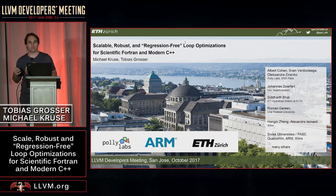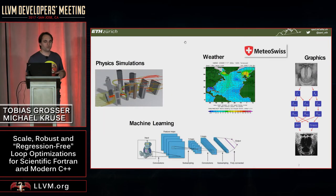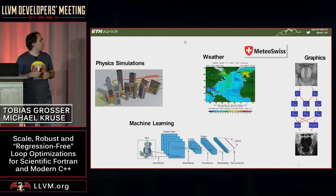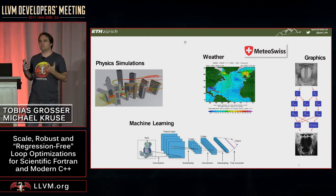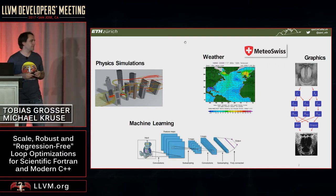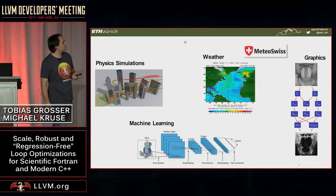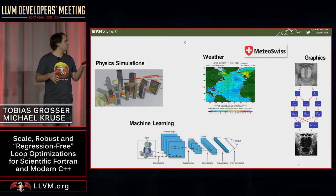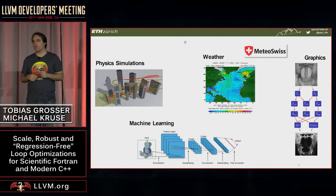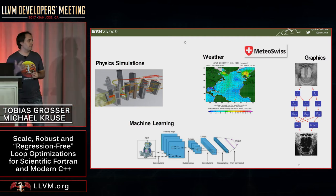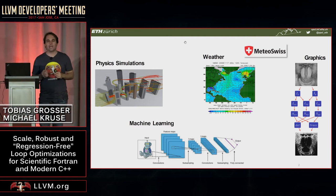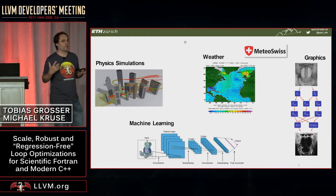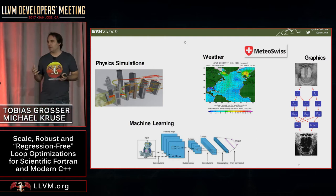Let me start with some motivation for what I'm currently working on. There's a large set of applications where advanced high-level loop optimizations make sense — physics simulations, weather simulation, graphics processing, and machine learning workloads. All those workloads have a lot of loop kernels, they are very performance sensitive, and they happen to fit into a model which we call the polyhedral framework.